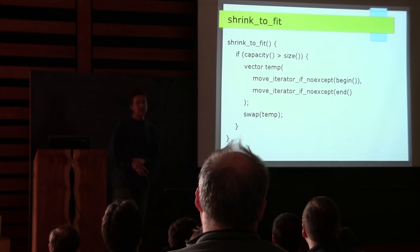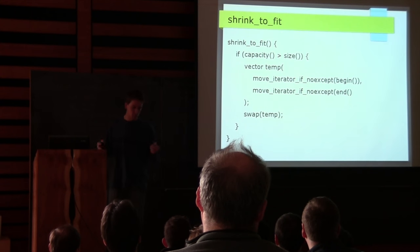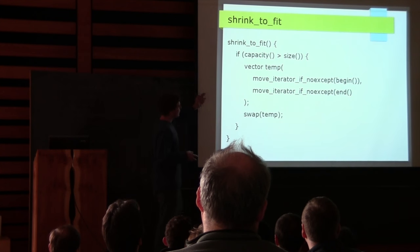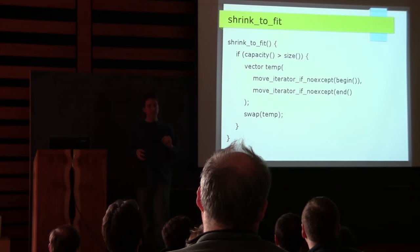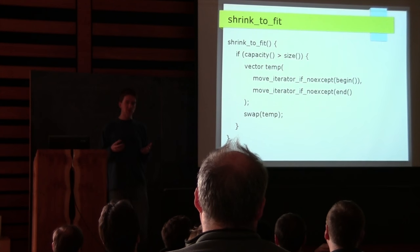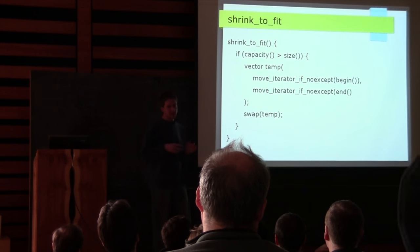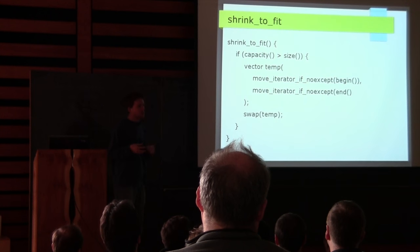shrink_to_fit was a function added in C++11. One way we know we can implement this entirely in terms of the public interface is that we always used to do this in C++03 — it was called the 'swap with a temporary' idiom. What we're doing is: if our capacity is greater than our size, we create a temporary vector, moving all the elements into it, then swap them. When we do that temporary vector construction, it allocates the exact amount of space we need, which is what shrink_to_fit is supposed to do. We can implement it entirely in terms of public functions.